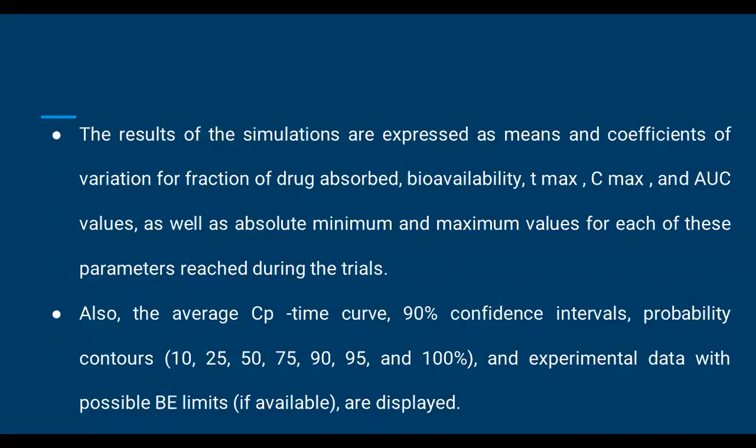Also, the average time, 90% confidence level, and probability contours at 10, 20, 50, 70, 90, and 100% can be obtained. We can correlate the variables and experimental data with the possible bioequivalence limits, which can be displayed and obtained using the GastroPlus model.